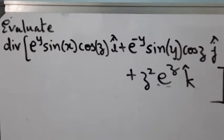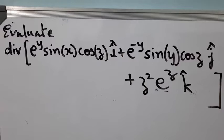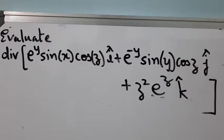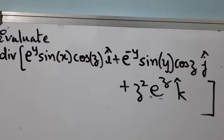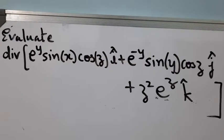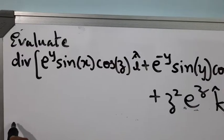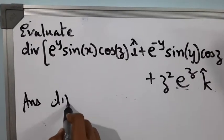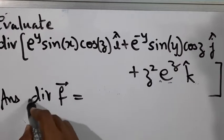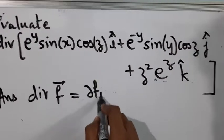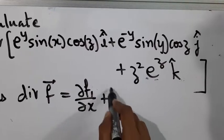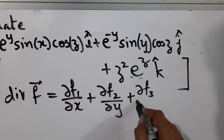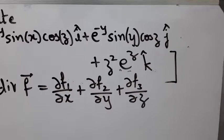We consider another example: find the divergence of e power y sin x cos z i cap plus e power minus y sin y cos z j cap plus z squared e power z k cap. Divergence of vector f is dou f1 by dou x plus dou f2 by dou y plus dou f3 by dou z.